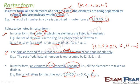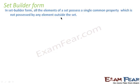It doesn't mean that writing an element twice is wrong — it will still be correct — but the convention is that we generally don't repeat elements in roster form. Now in set builder form, all the elements must possess a single common property which is not possessed by any element outside the set. Finding that common property is very crucial.